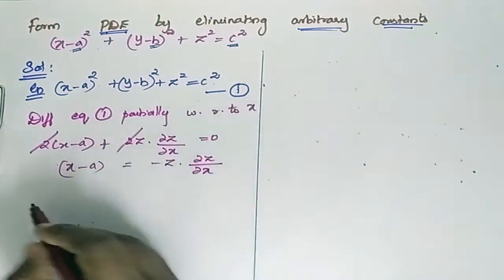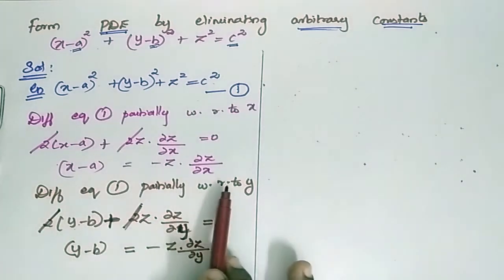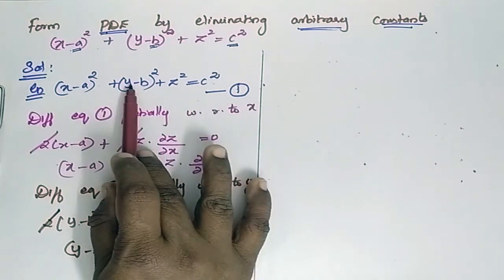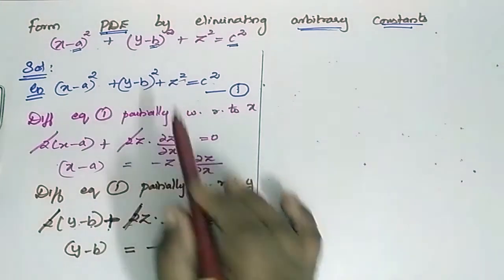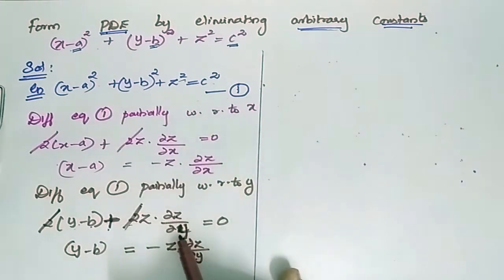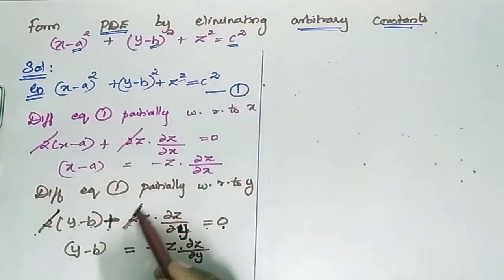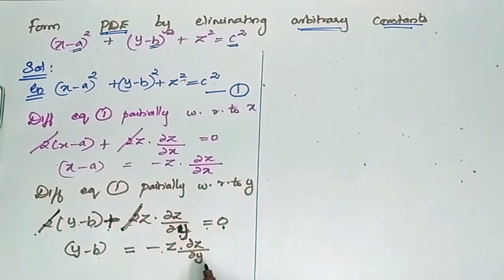Now differentiate equation 1 partially with respect to Y. Differentiating the Y term gives 2 into (y minus b) plus 2z times ∂z/∂y equals 0. Simplifying, the 2s cancel, so y minus b equals minus z times ∂z/∂y.